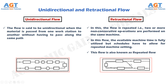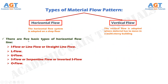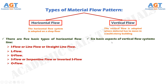Now that we have discussed about the horizontal flow lines in detail, let's focus on the vertical flow lines or vertical flow pattern of materials. The vertical type of flow is for multi-storey buildings. In order to have the materials handling systems and control mechanisms operate effectively, the following six basic aspects of vertical flow systems are in use.